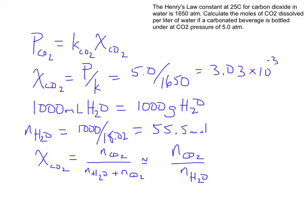And I already know that this is going to be equal to x, that's what I'm trying to find, over 55.5. And I know that all of this has to equal 3.03 times 10 to the minus 3. So this is going to tell me that x which is equal to my moles of CO2 is going to be equal to about 0.17 moles of CO2.